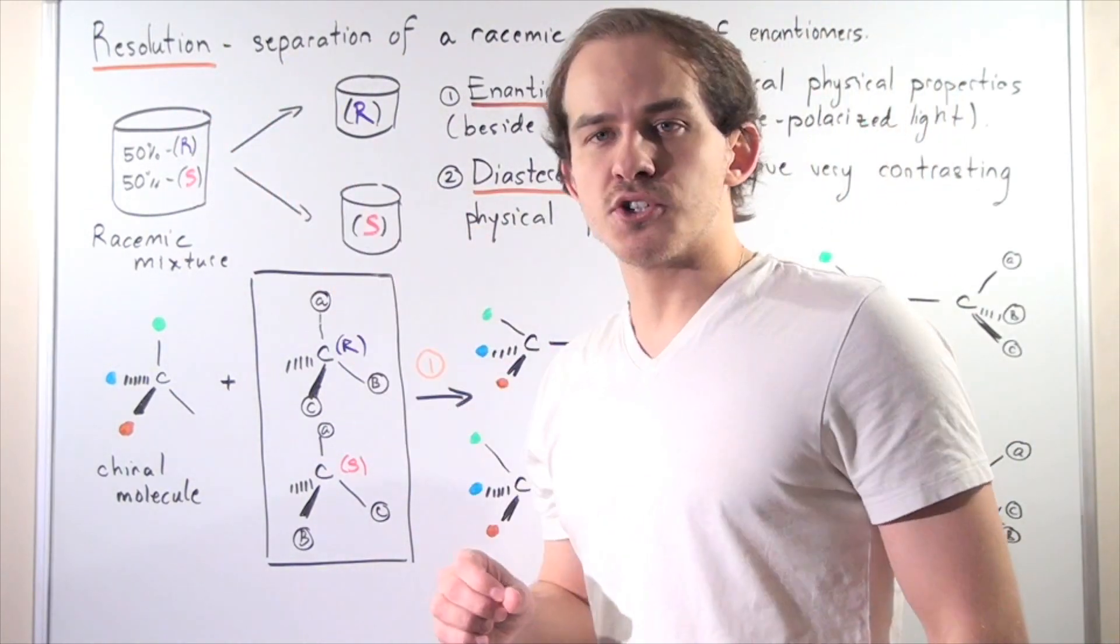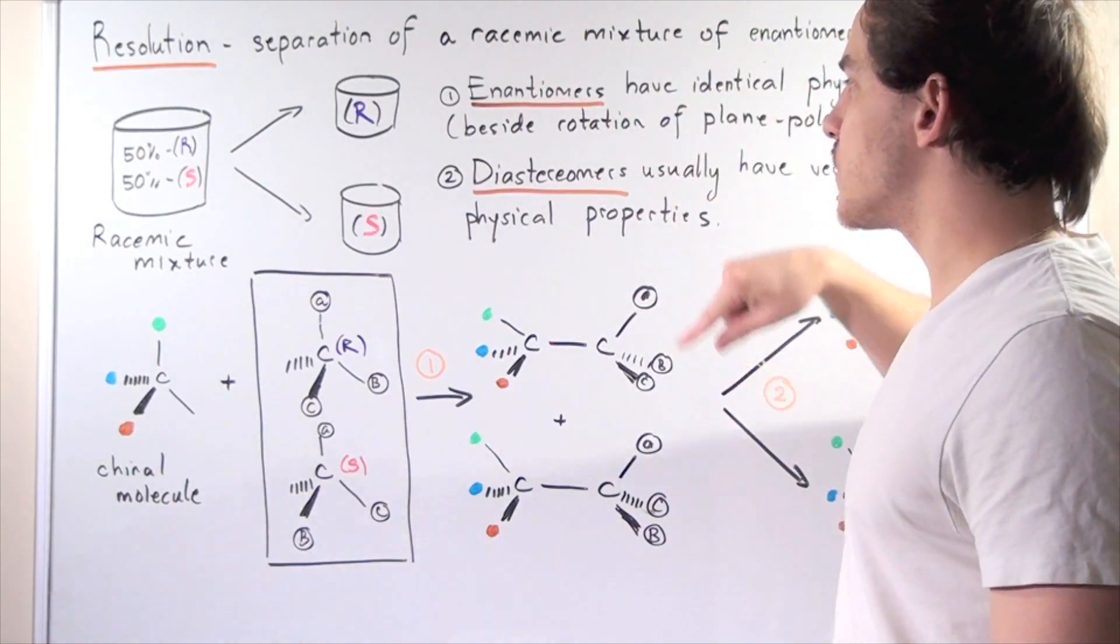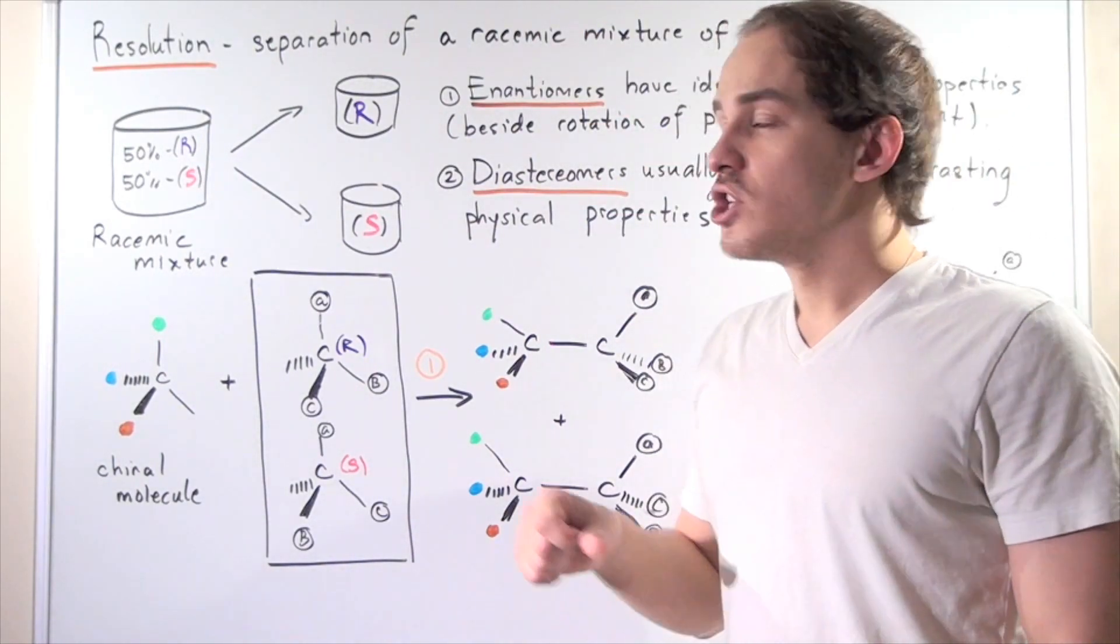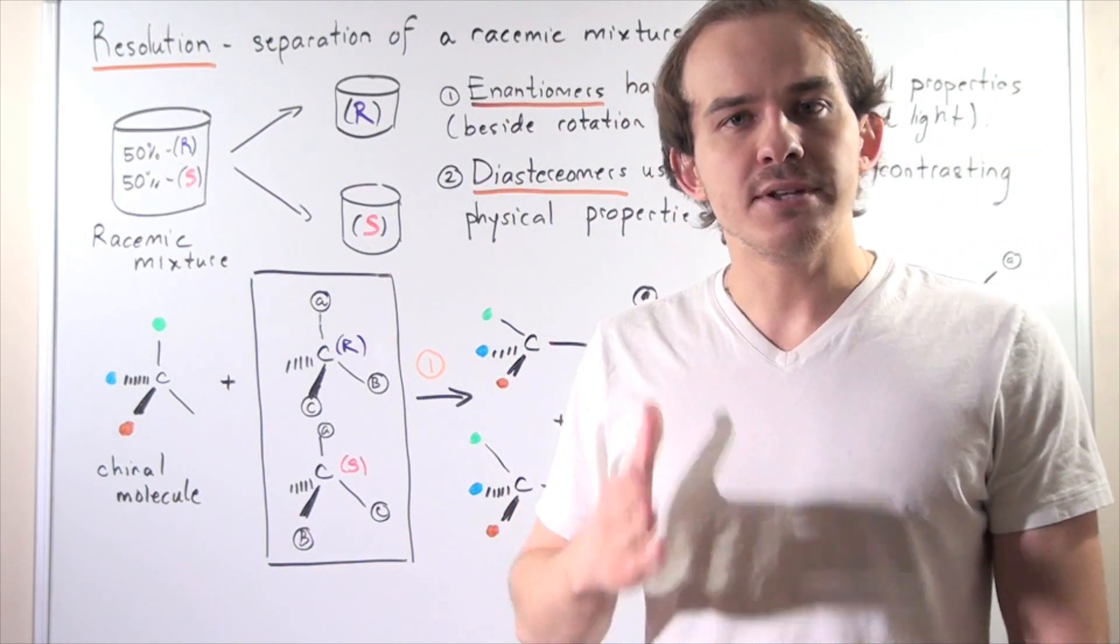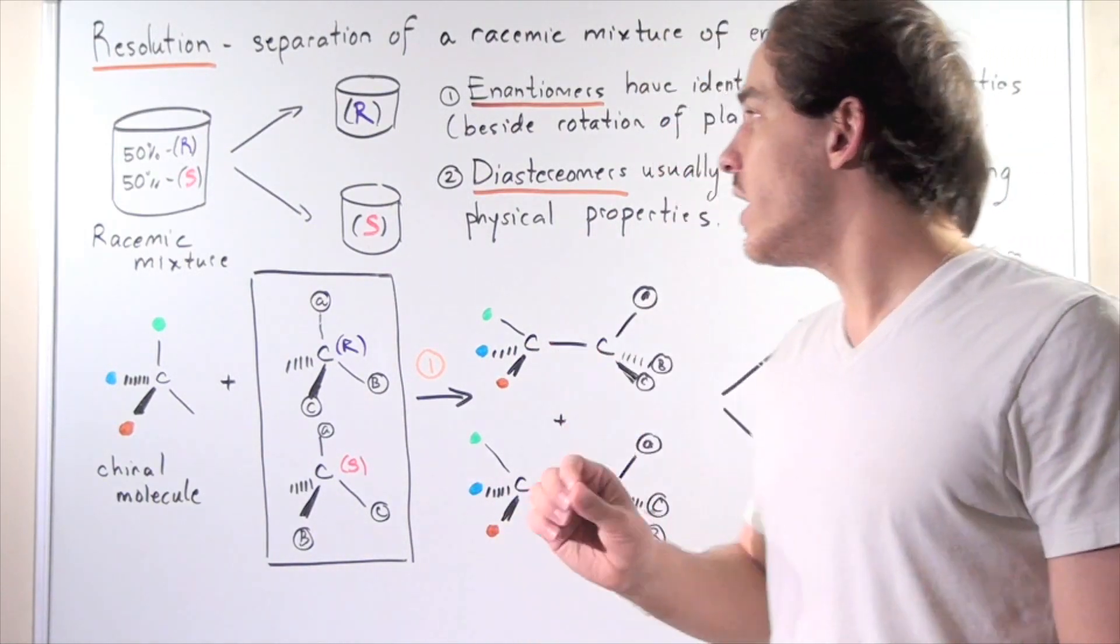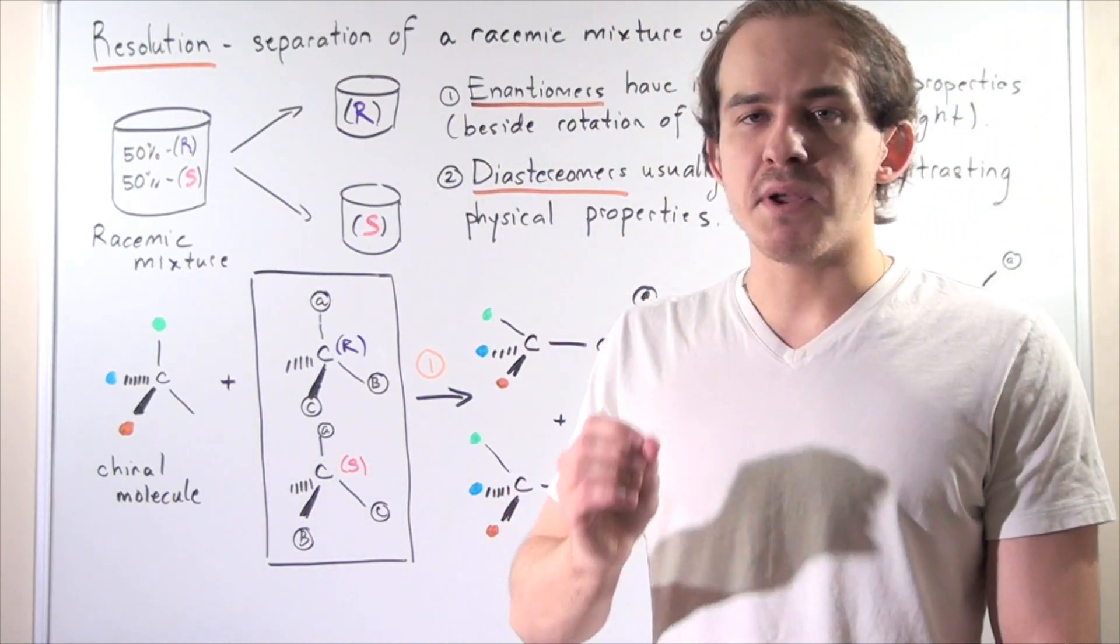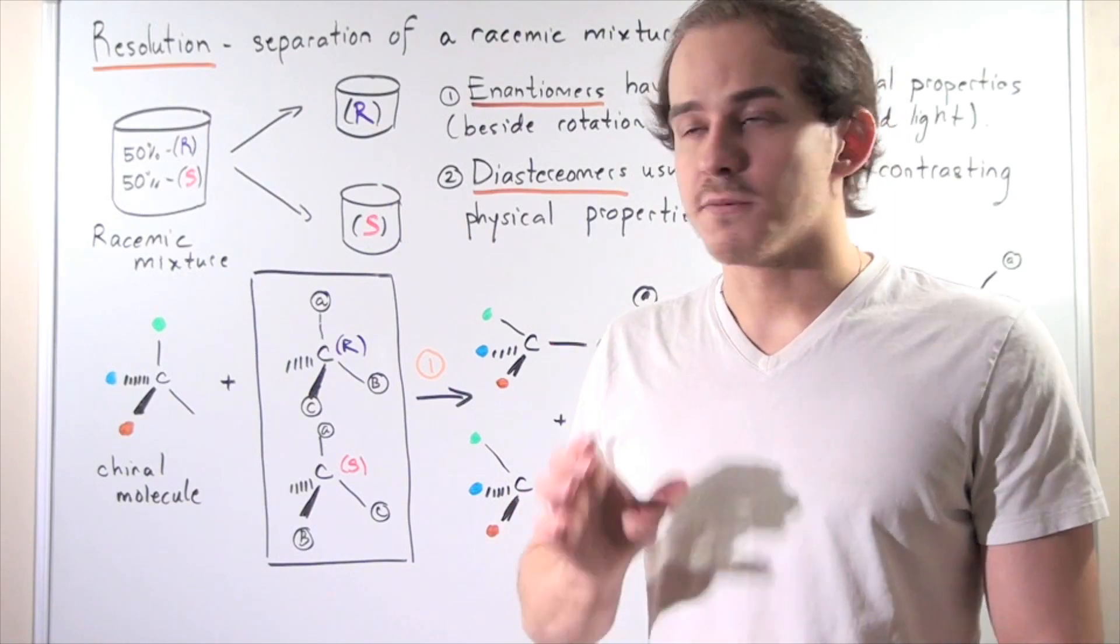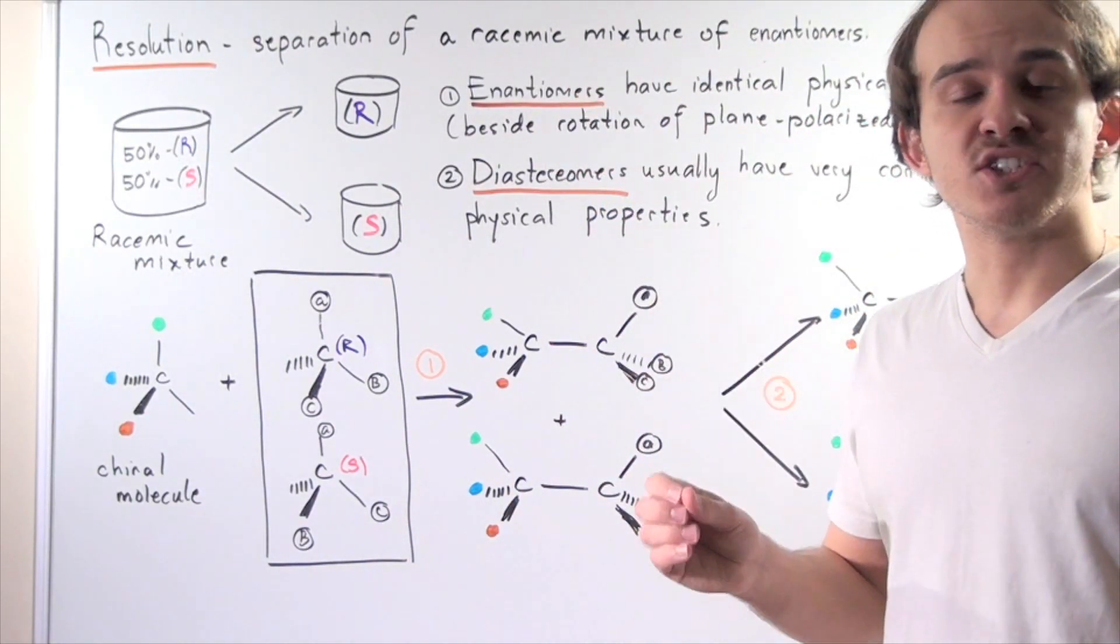Before we discuss the steps of resolution, let's recall the distinction between enantomers and diastereomers. Enantomers are stereoisomers that are mirror images of one another, while diastereomers are stereoisomers that are not mirror images of one another.